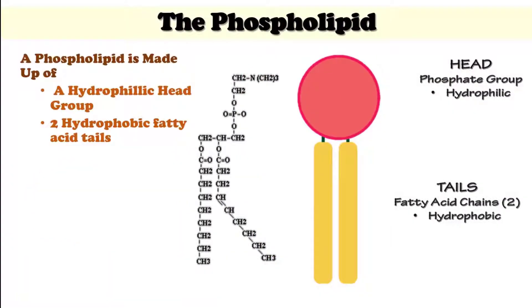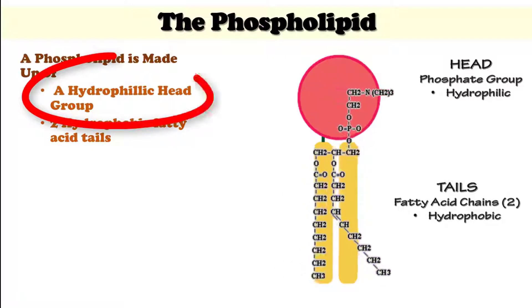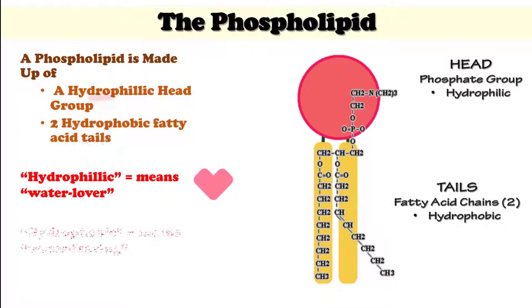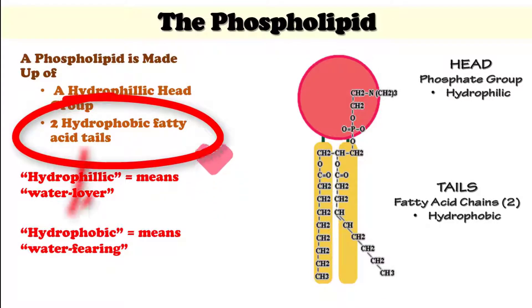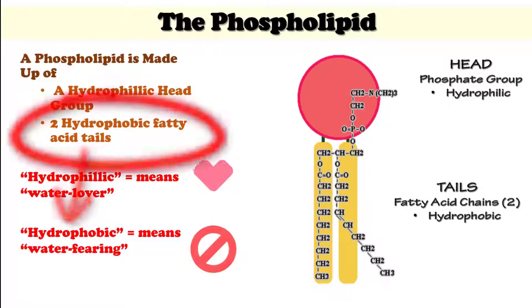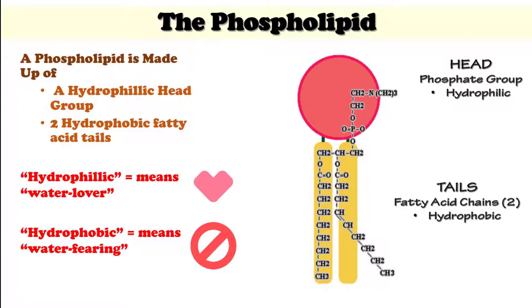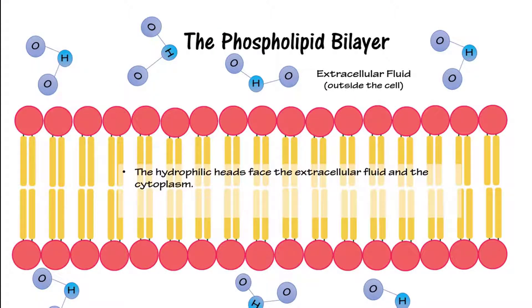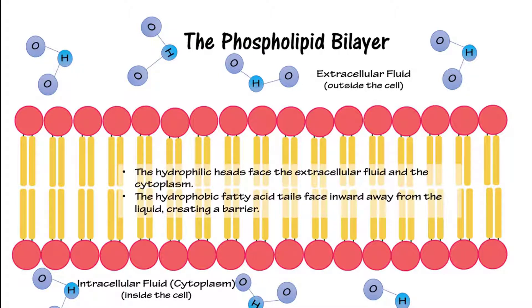A phospholipid is made up of a hydrophilic head group — hydrophilic means water lover — and it has two hydrophobic fatty acid tails. Hydrophobic means water fearing. The hydrophilic heads face the extracellular fluid and the intracellular fluid. The hydrophobic fatty acid tails face inward towards each other, away from the liquid, thus creating a barrier.